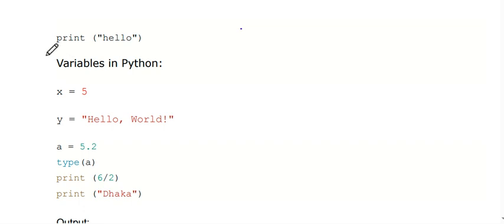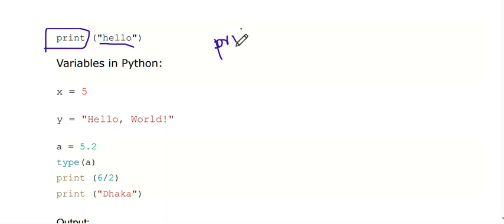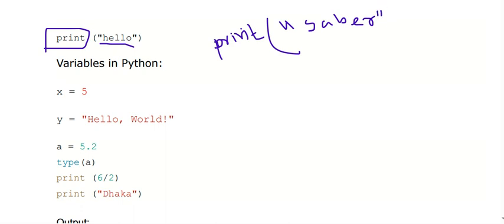First, we would like to start with how we can print something in Python. I'm going to use the print function with parentheses and double quotation marks to print something. So I can print 'hello'. There is a difference from other languages — when we have a semicolon, it is syntax there. It doesn't matter in Python.